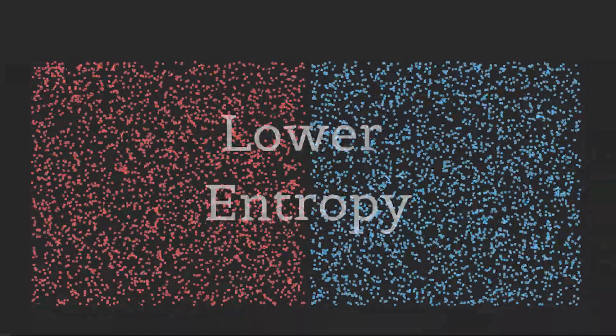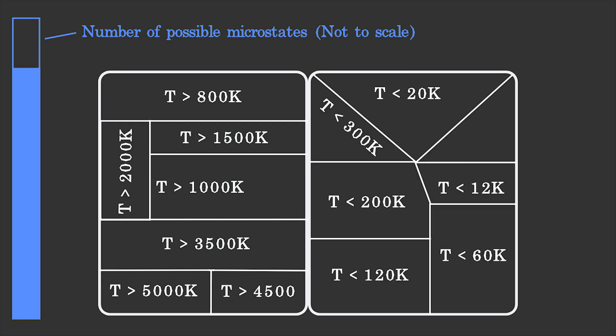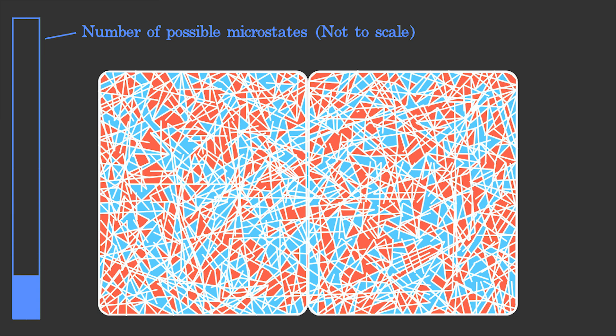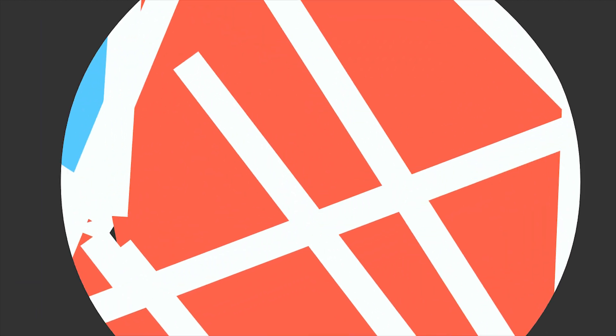Nothing in the laws of physics is actually stopping your system from going in the opposite direction. But because there are so many more possibilities in state B than state A, over time the system will assume a state correlating to state B. If we keep adding more and more restrictions, the entropy keeps decreasing. Eventually each restrictive box will only contain one molecule. If we have two molecules with different speeds, theoretically we can get some work out of it.